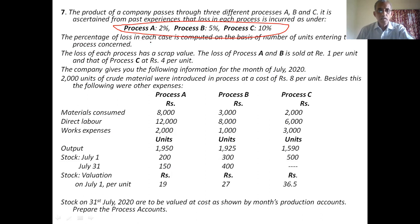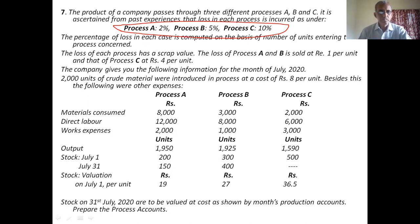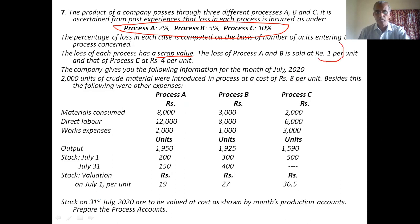The percentage of loss in each case is computed on the basis of the number of units entering the process — that is, on the input. The loss of each process has a scrap value. The loss of process A and B is sold at Rupee 1 per unit.